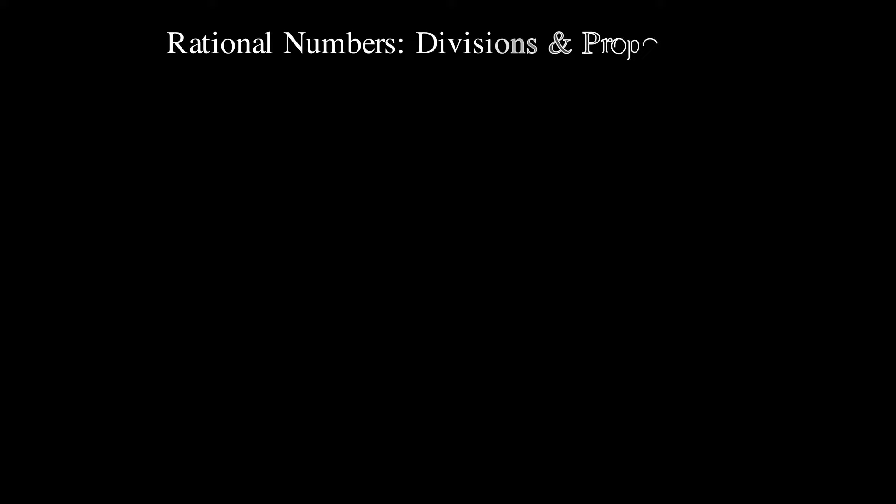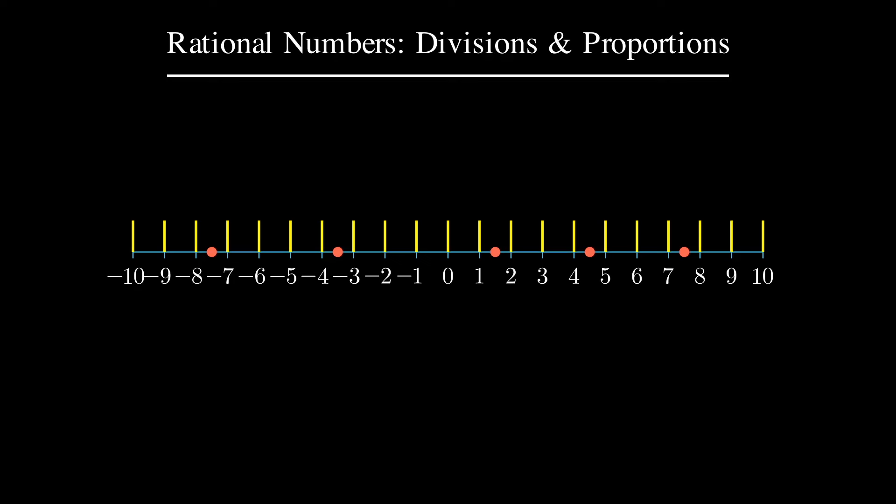One fascinating property of rational numbers is that they're dense on the number line. Between any two rational numbers, no matter how close, there exists another rational number between them. You can find one just by taking the average. This property makes them incredibly versatile for approximating other types of numbers.